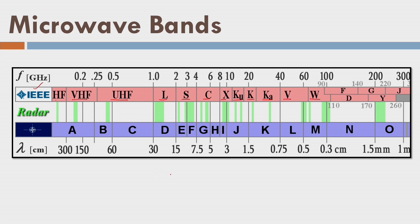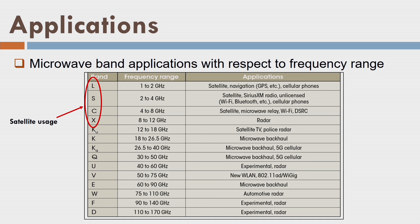You might have heard that GPS has frequencies L1, L2, and L5 — all belonging to the L-band. We have many bands with different applications. When we talk about radar, radar is basically X-band radar. Other bands of the microwave and their applications are listed here as well.